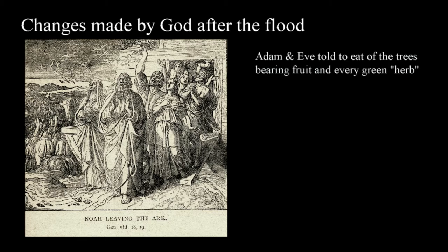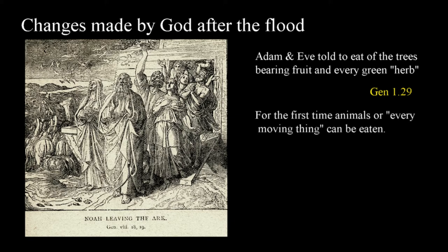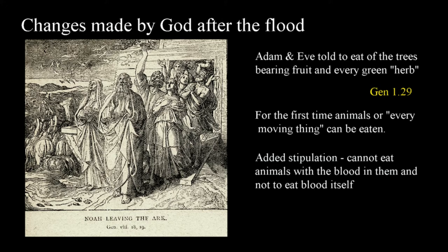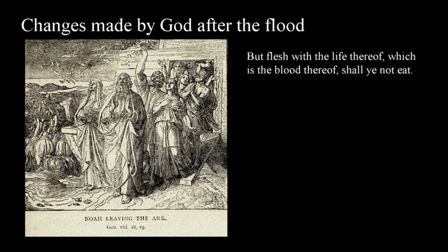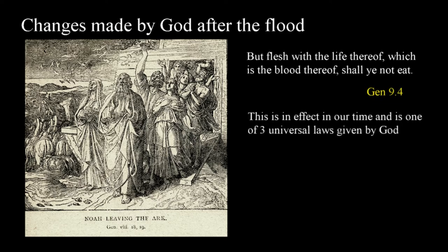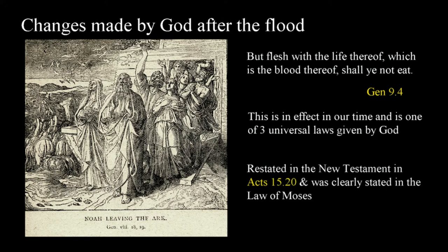There is a significant change being made here. In the beginning, Adam and Eve were told to eat of the fruit of the trees of the garden and every green herb in Genesis 1:29. Now after the flood, for the first time animals can be eaten — every moving thing. The stipulation is that they weren't to eat animals with the blood in them, and they weren't to eat the blood itself, because the life of the flesh is in the blood. This command is still in effect in our time and is one of three universal laws given to all mankind by God, restated in the New Testament in Acts 15:20.